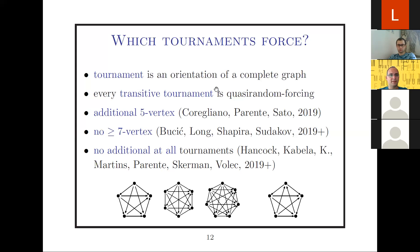For graphs, Misha Tyomkin was talking about joint work with Asaf Shapira showing that fixing the density of all cliques does not force quasi-randomness. People are definitely interested in what finite or infinite tuples of graphs force quasi-randomness, but I don't have all the results at hand right now.